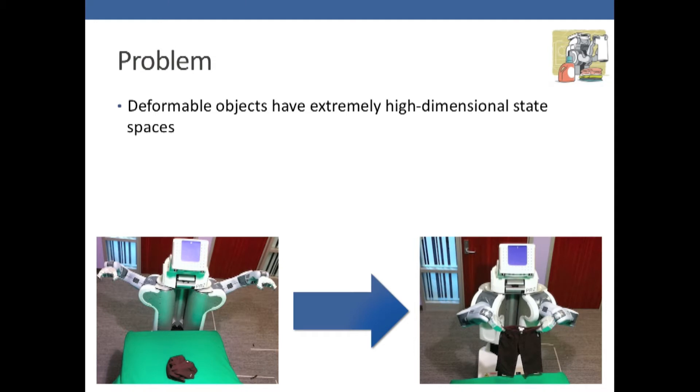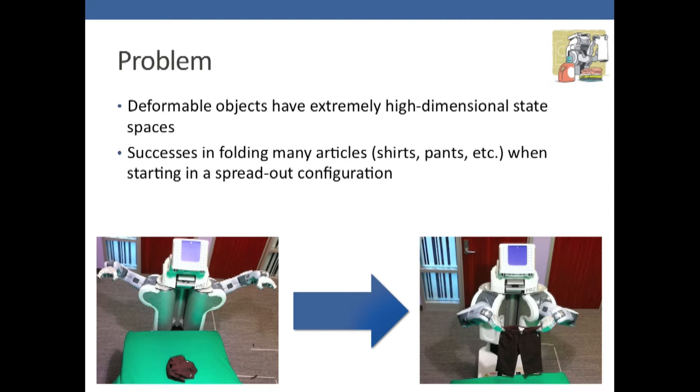The problem is that deformable objects have extremely high dimensional state spaces. Although there's been successes in folding many articles such as shirts and pants once starting out in a spread out configuration, by assuming they're spread out, this essentially reduces the dimension of the problem. If you know it's spread out, a much smaller number of state variables is relevant.